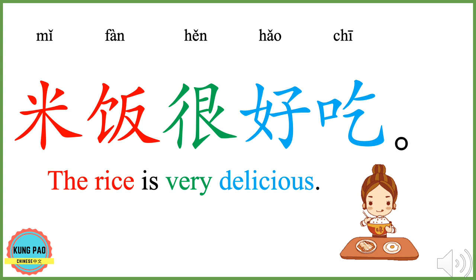米饭很好吃。 米饭 means rice. 很 means very. 好吃 means delicious. 米饭很好吃 means the rice is very delicious.